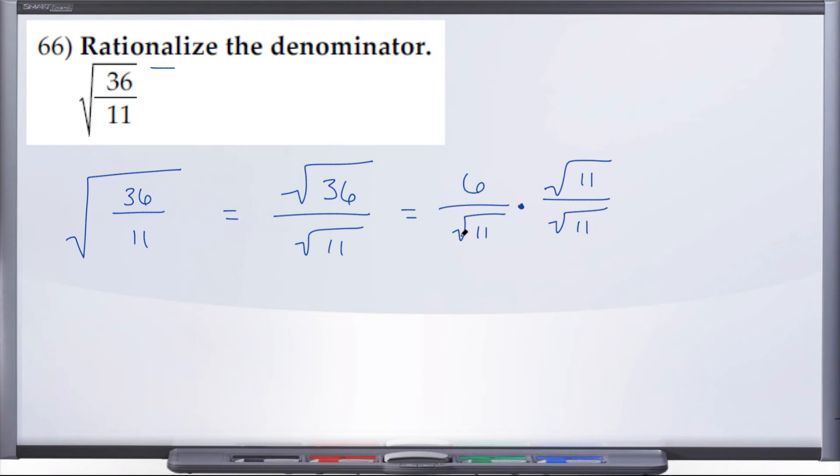So when you multiply something by one, you're not changing the value of what you originally started with, you're just changing the form. So 6 over radical 11 times 1 is still 6 over radical 11, it's just going to look different at the end.